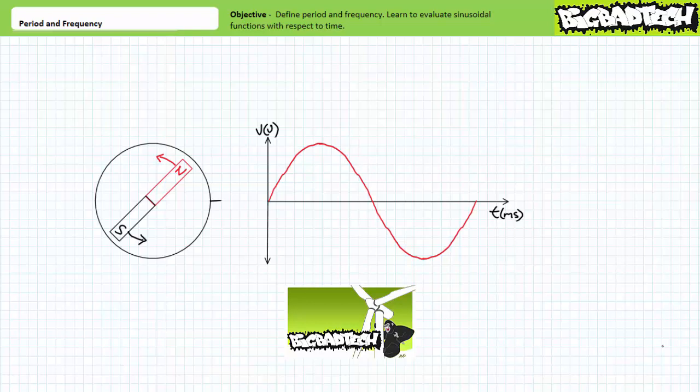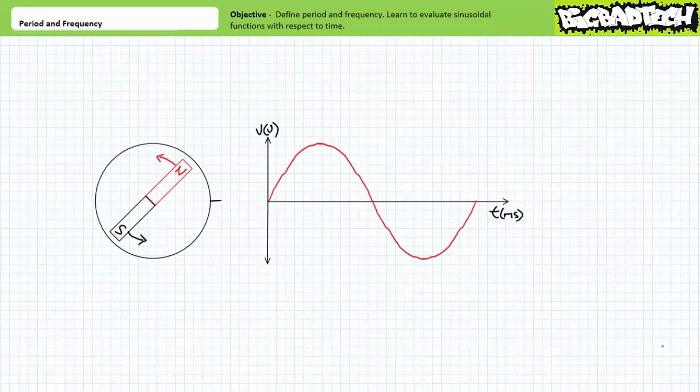If you haven't watched these lectures yet or only dimly recall their contents, please take the time to do so now. This lecture presumes the viewer is familiar with radians and degrees, and can convert between these two positional measurement units, has a passing familiarity with the sine function and can calculate peak, peak-to-peak, and effective magnitudes.